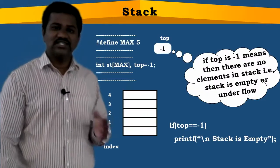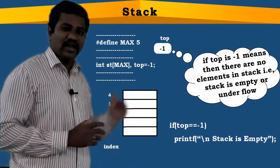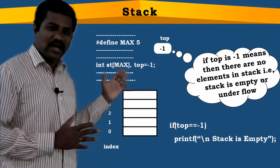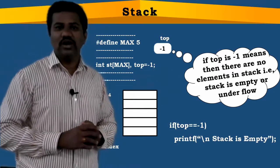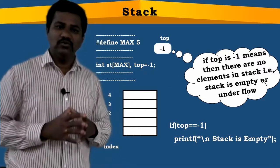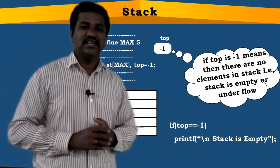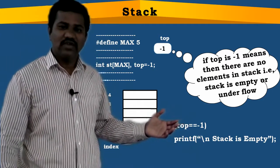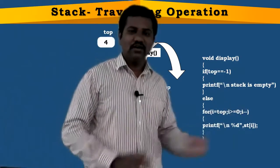The first step is checking whether stack is empty or not. When you define a macro and take the macro value as 5, declaring one array based on that macro, and initializing the top variable with minus one. When you call this display function, if your top value is still minus one, then we can print a message that stack is empty.